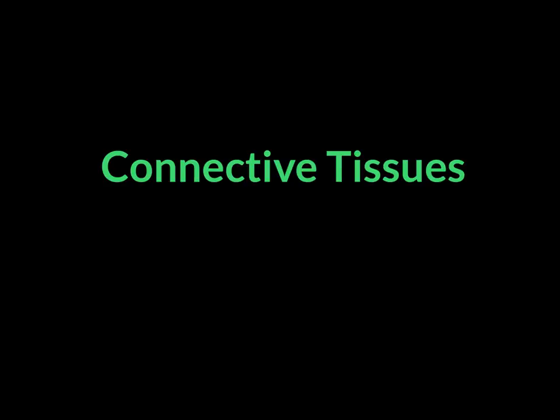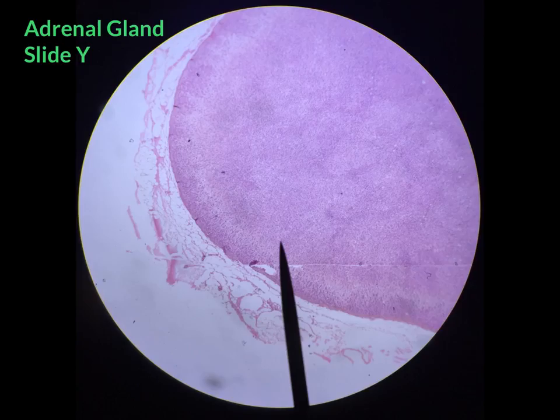In this video I'm going to help you identify and locate connective tissues. The first tissue you'll identify is adipose tissue, and you can find adipose tissue on the adrenal gland on slide Y.